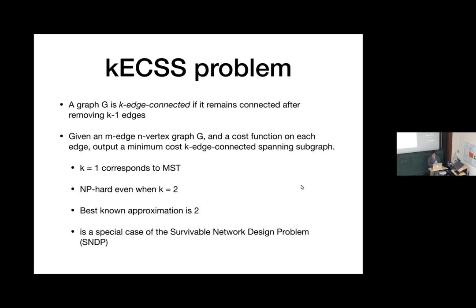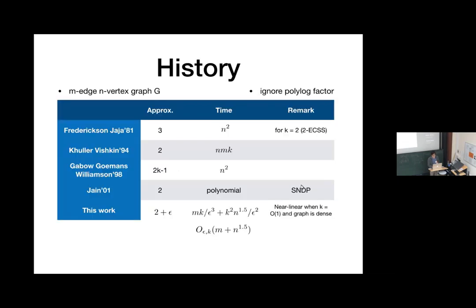This problem is NP-hard even when K is equal to 2, and the best known approximation is 2. It's a special case of the broader class of survival network design problem. Here's a little bit of the status of this problem.